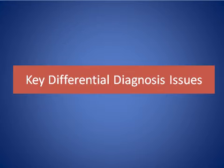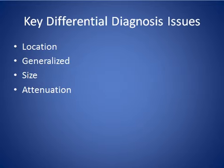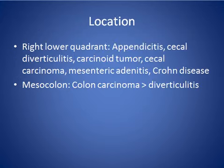Here are some keys for differential diagnosis. The keys include the lymph node location — either localized or generalized — size, and the attenuation of the lymph node.